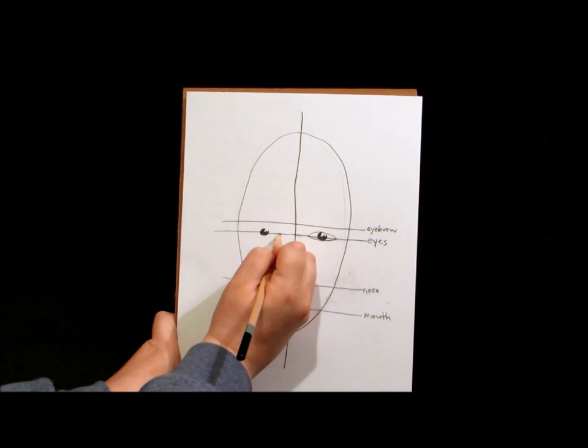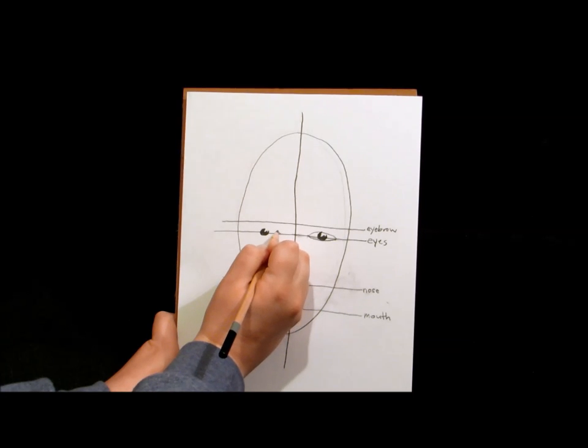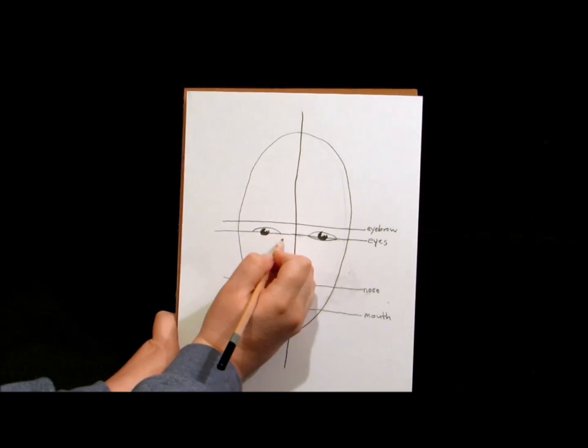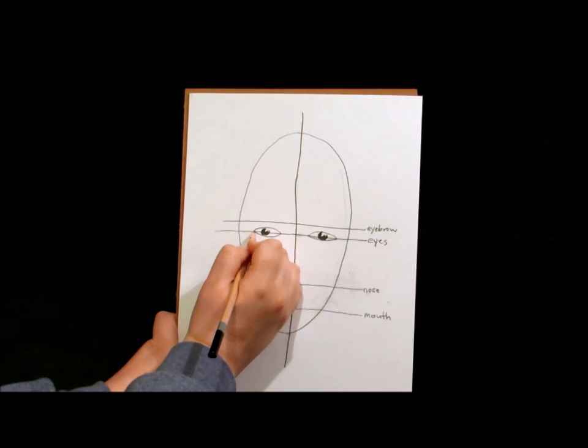So now we know that that eye is going to start about right there. We're just going to do that almond shape again, just like we did.